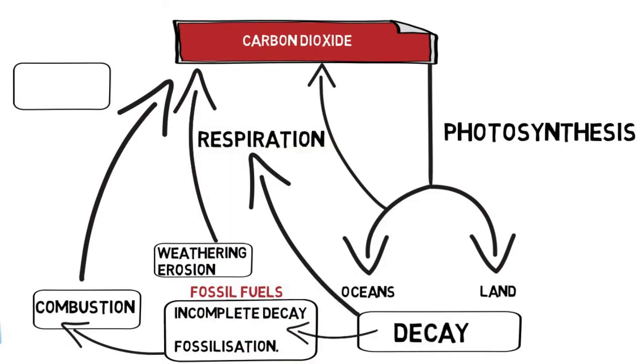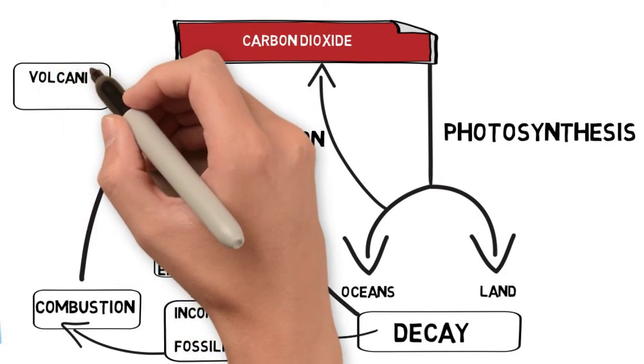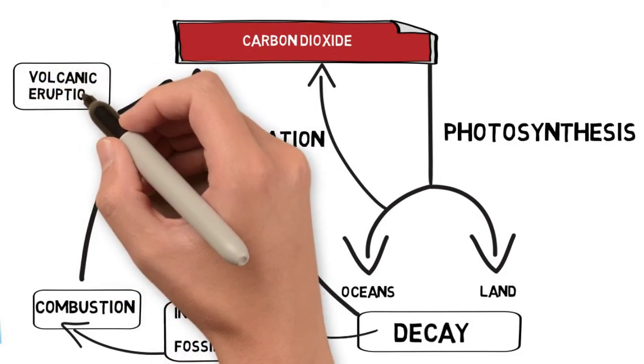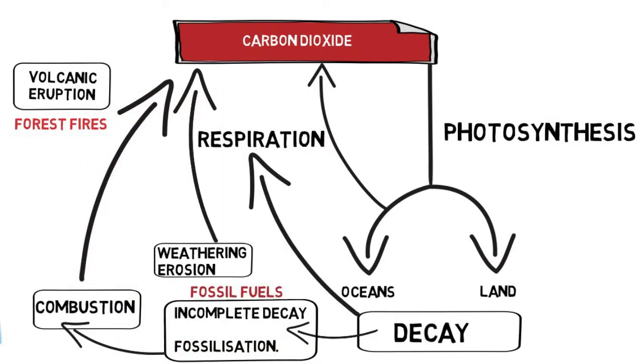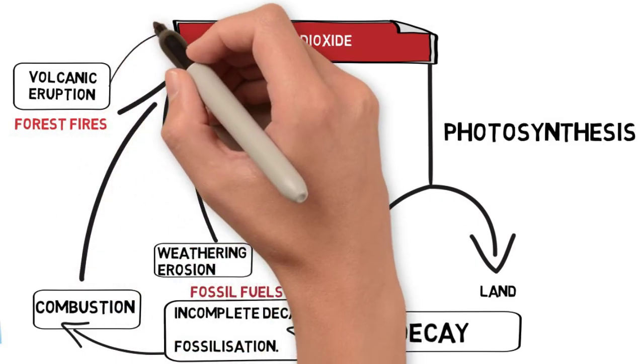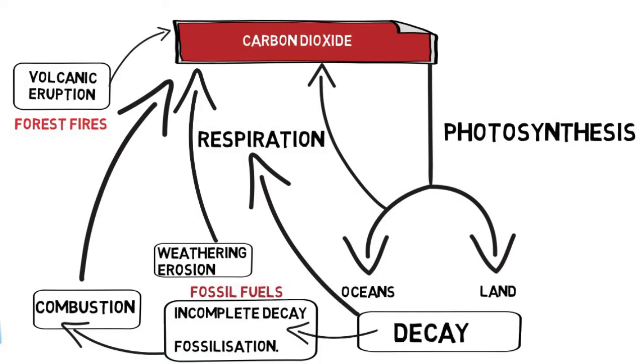So there is another way in which a lot of CO2 is emitted back to the atmosphere and this is through volcanic eruption. So bear in mind what happened this summer as well, forest fires. That would have created a lot of extra CO2 going back into the atmosphere.